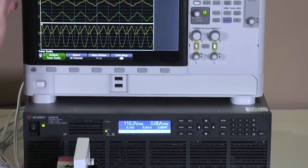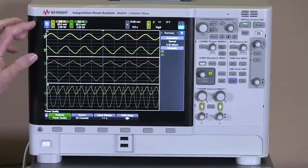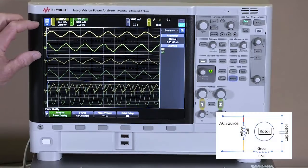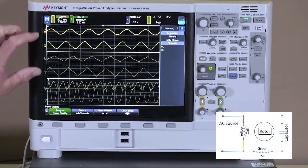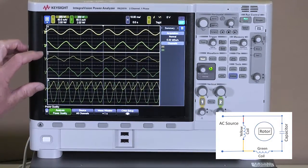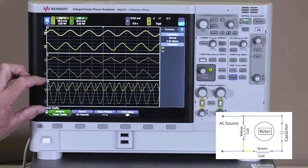We also have a power analyzer, and the power analyzer is able to measure the voltage across the coils, the current through the coils, and then the power in each of the coils.